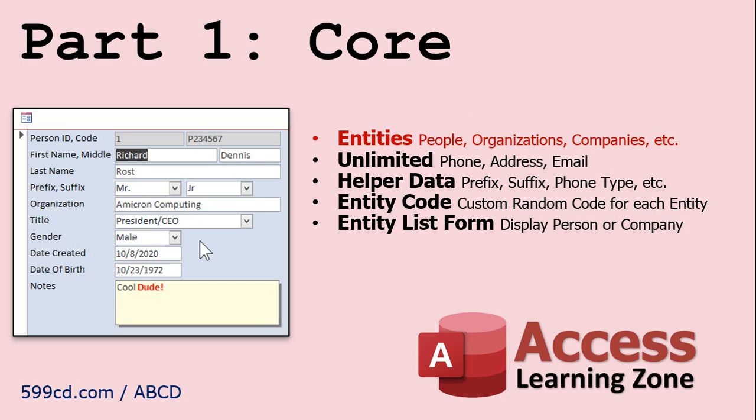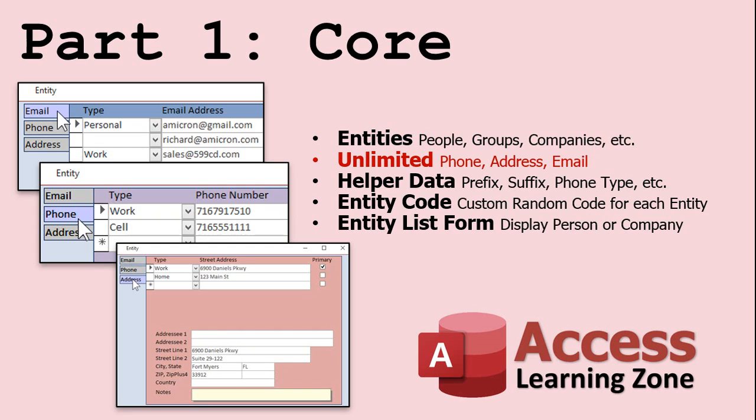Part 1, the Core Database, is currently available. It covers building all the tables and forms required to track entities — which are people, companies, organizations, and so on. Each entity can have an unlimited number of phone numbers, email, and physical addresses.